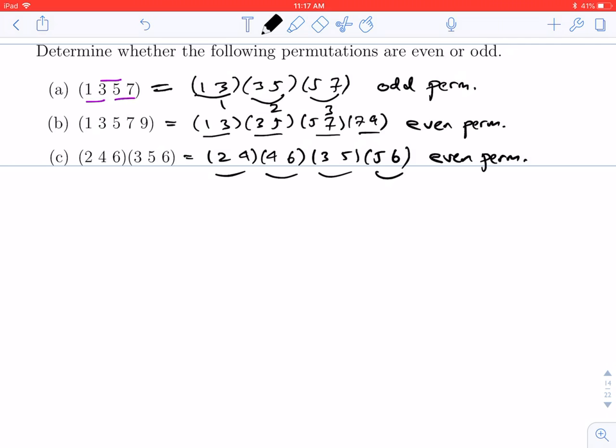Now you might notice that once you know the length of the cycle, you can actually determine how many of these pairs you're going to get. For instance, when we had a 4-cycle we got 1, 2, 3 pairs, but with a 5-cycle we got 4 pairs. In fact, if you have an n-cycle, you can write that as n minus 1 transpositions.